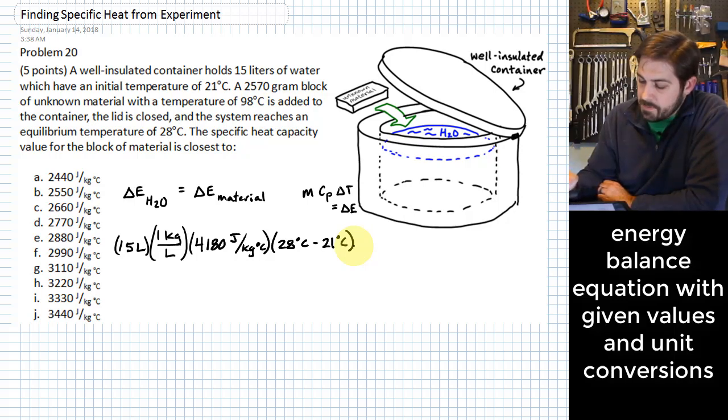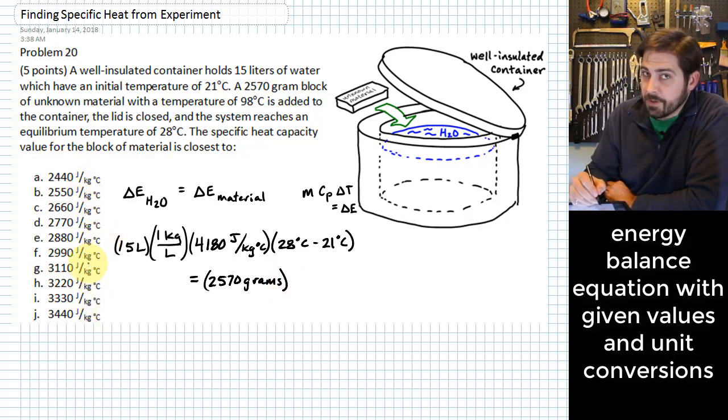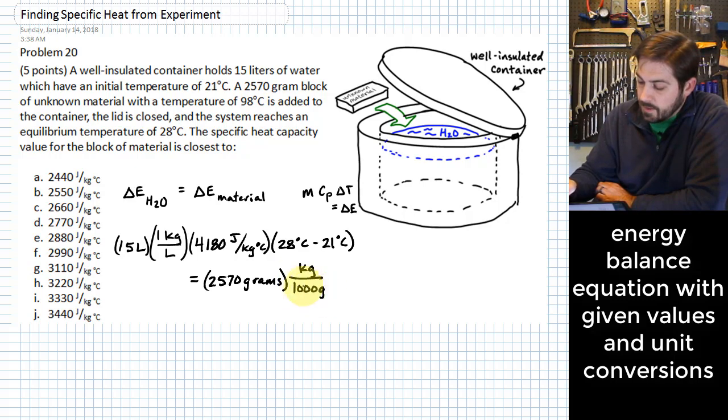Okay, and this has to be equal to the change in energy of the material, and so that is going to be we have 2570 grams. It looks like all of my heat capacities over here are all in joules per kilogram degree C, so I actually don't want this in grams, I want it in kilograms, so I'm going to multiply by 1 kilogram over 1000 grams.